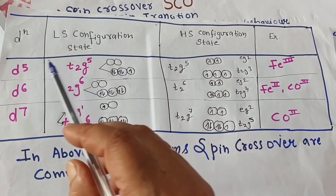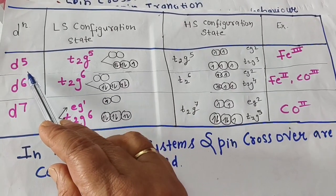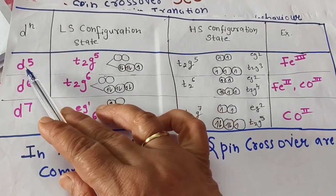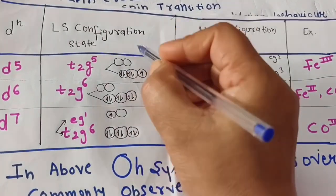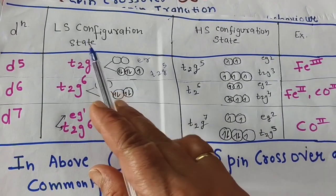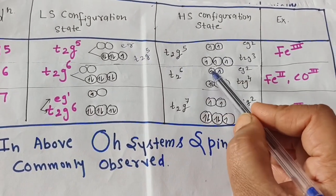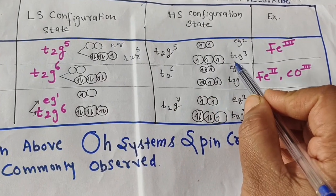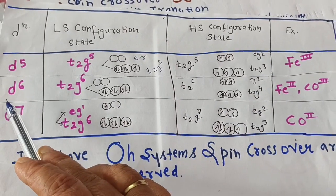For d5 configuration: t2g has maximum five electrons. In the low spin state, all five electrons are in t2g with fewer unpaired electrons (t2g⁵, eg⁰). In the high spin state, electrons distribute as t2g³ eg², giving the maximum number of unpaired electrons. This is observed in iron(III) metal ions.